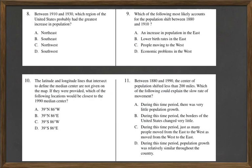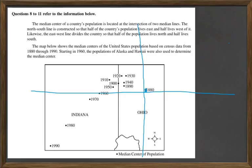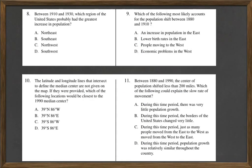And so first question, 8. Between 1910 and 1930, which region of the United States probably had the greatest increase in population? Well, I'm going to go over there and I'm going to connect the dots and see which direction it is. And whatever direction that line's going is going to give me the data I need. So 1910 to 1930. Well, 1910 is right here, and 1930 is a little north and east. And let's go back to our question. A would be northeast. That's the answer.